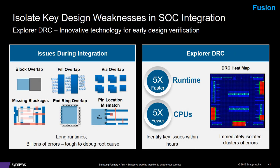The next level of bringing ICV in is the Explorer DRC. This is primarily for integration — as we take the Hercules block up into the DSU or the DSU up into the chip level, you may find some integration errors like overlapping pins. What the Explorer DRC does is quickly find those, and through the heat map you can identify them.